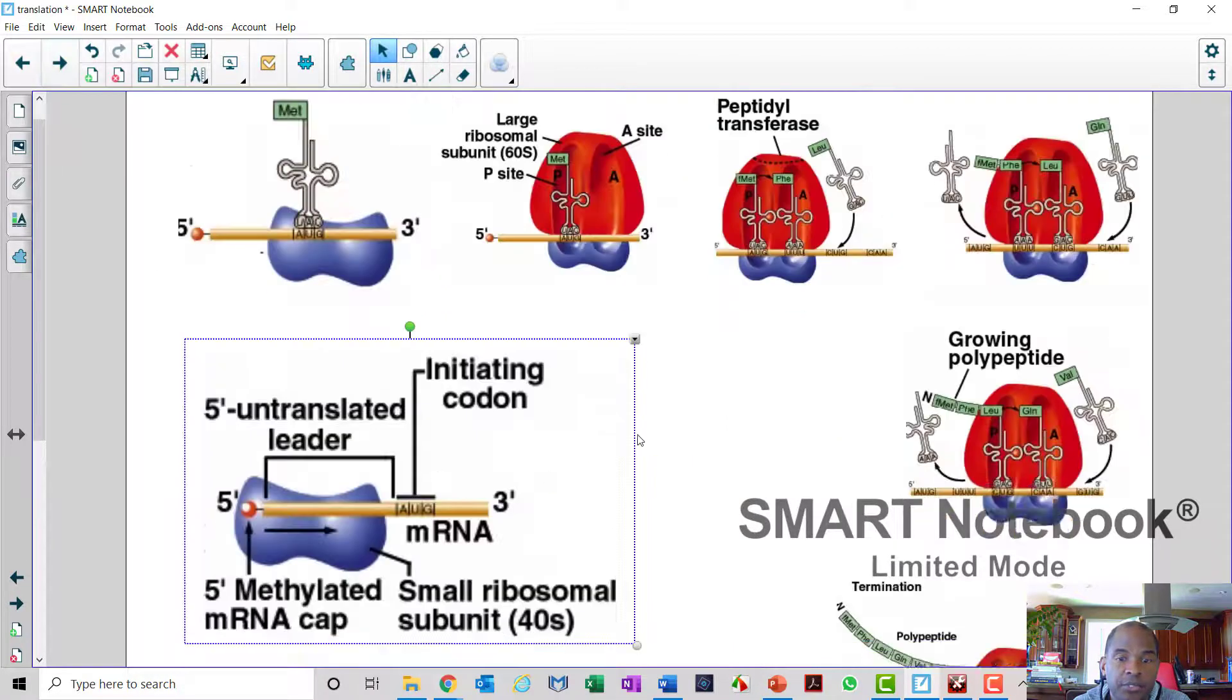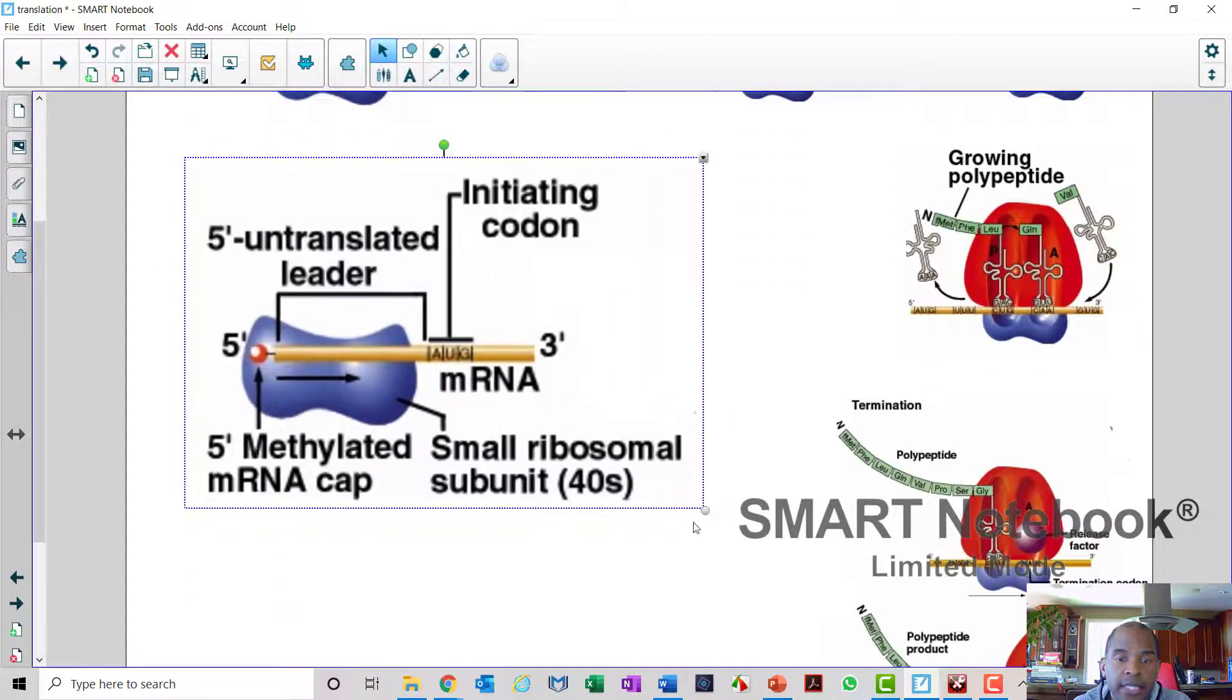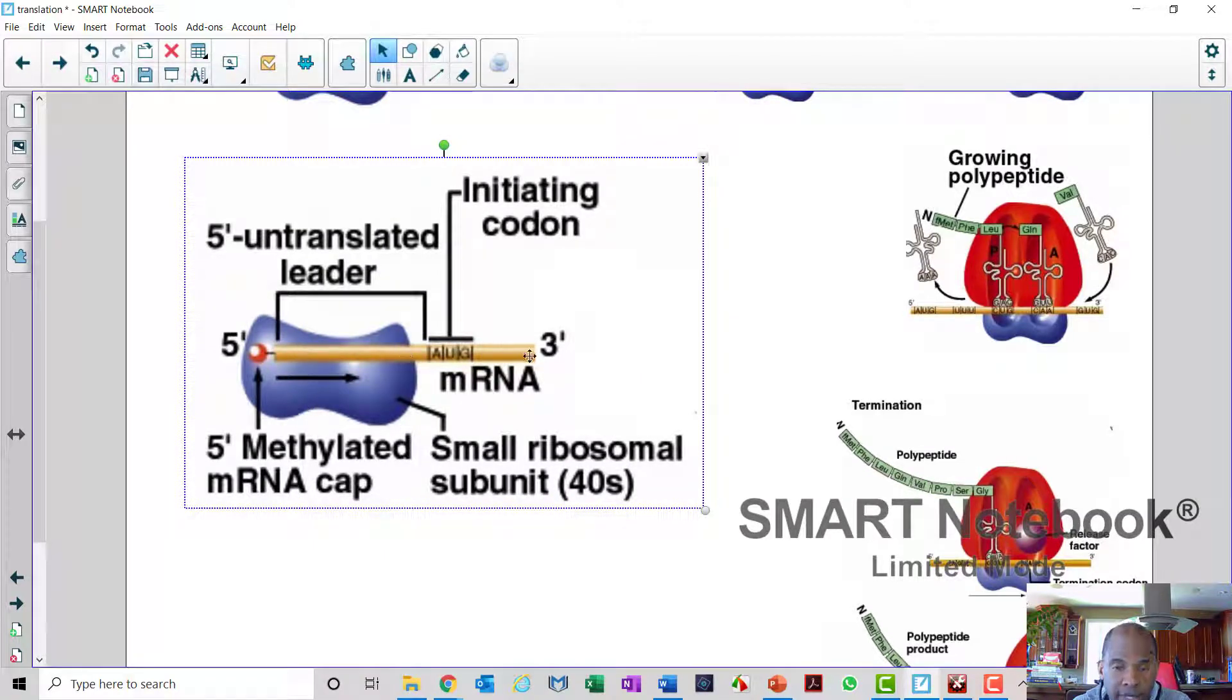Let me just jump to the next screen here. It'll be easy for you to show you. So in stage one, what happens is the small unit binds to the mRNA in a region that's upstream of the start codon, the initiating codon, the Met. And so now you see the reason why this is called the 5' prime, even though when I was drawing it, it seemed to be on the 3' prime end because it doesn't matter what it is on the DNA.